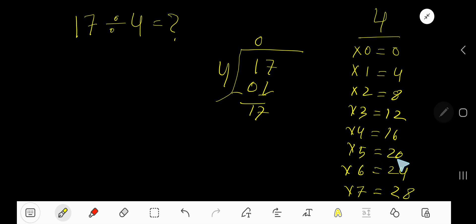Subtract. 17 minus 16 is 1. The remainder is 1. Remainder 1 is our answer, but if you want to write your answer in decimal form, then take a decimal and add zeros.